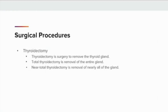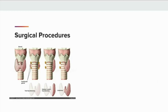Additional surgical procedures include a thyroidectomy. A thyroidectomy is surgery to remove the thyroid gland. Total thyroidectomy is removal of the entire gland, and near-total thyroidectomy is removal of nearly all of the gland. In the image shown here, moving left to right: image one shows a view of the thyroid gland with left and right lobe and isthmus; image two shows a total thyroidectomy has been performed; image three shows a subtotal or partial thyroidectomy, removing the left lobe, the isthmus, and part of the right lobe; and image four shows a lobectomy, with the left lobe removed.